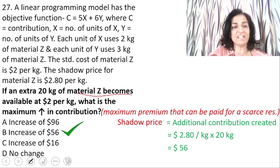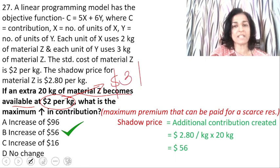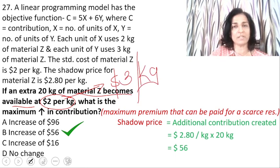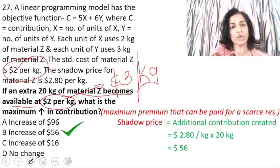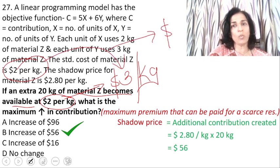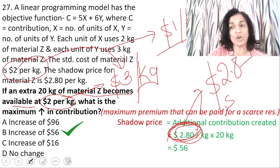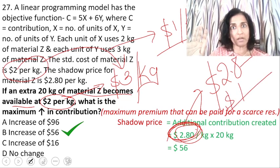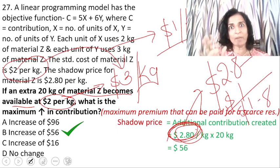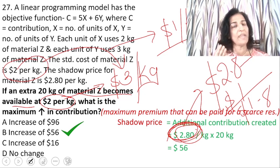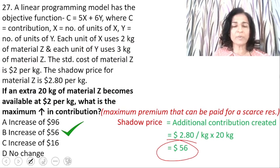Now for a tricky variant: if the material were available at $3 per kg instead of $2, you would be paying a premium of $1 per kg over the existing rate. You would subtract that premium: $2.80 minus $1.00 = $1.80 would be the additional net contribution. But in this question we are not paying a premium, so the entire $56 additional contribution falls into our pocket.